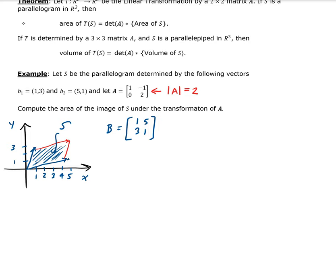Using a previous theorem, if we're given b₁ and b₂, this forms our matrix. Based on this, we can find the area of S. The determinant of this matrix is 1 minus 15, giving us -14. Therefore, the area of S is the absolute value of -14, which is 14.